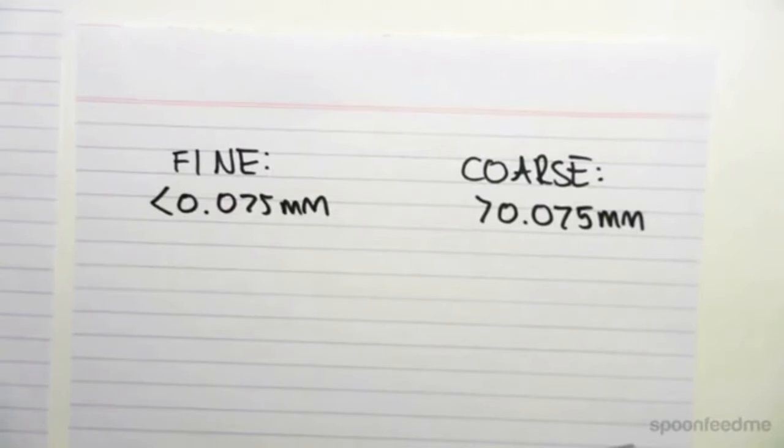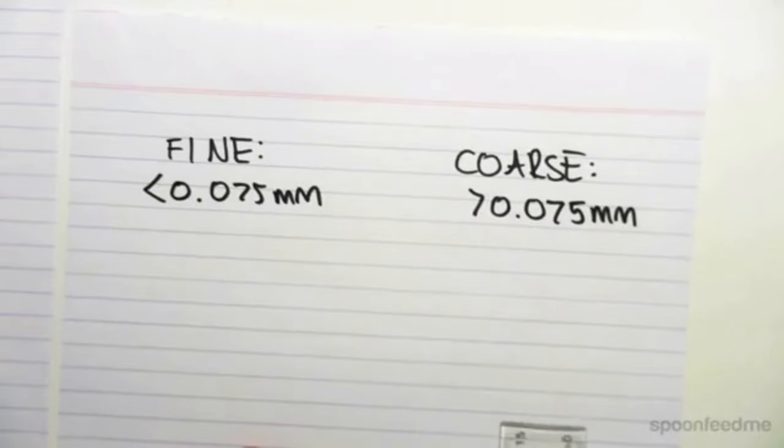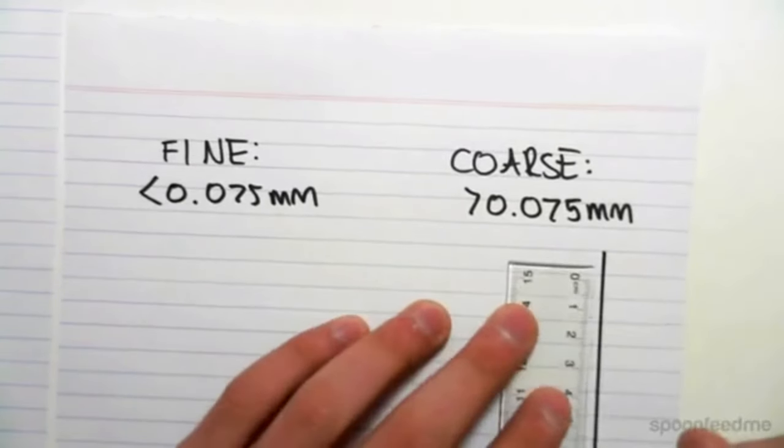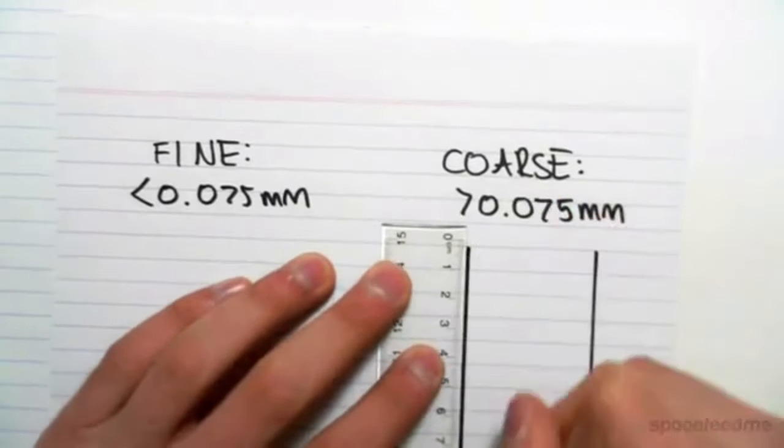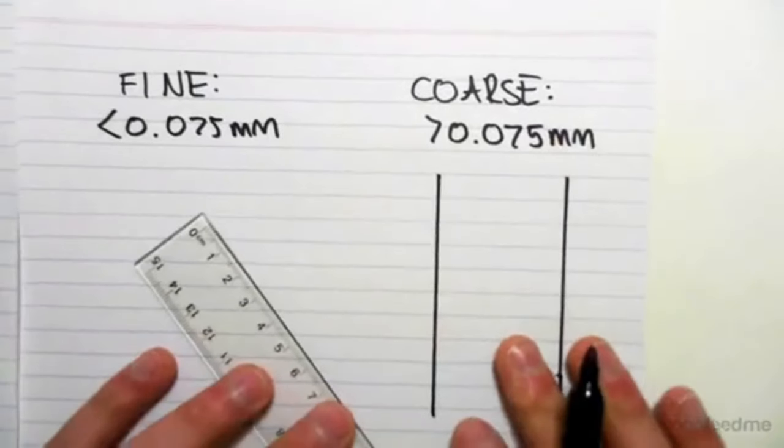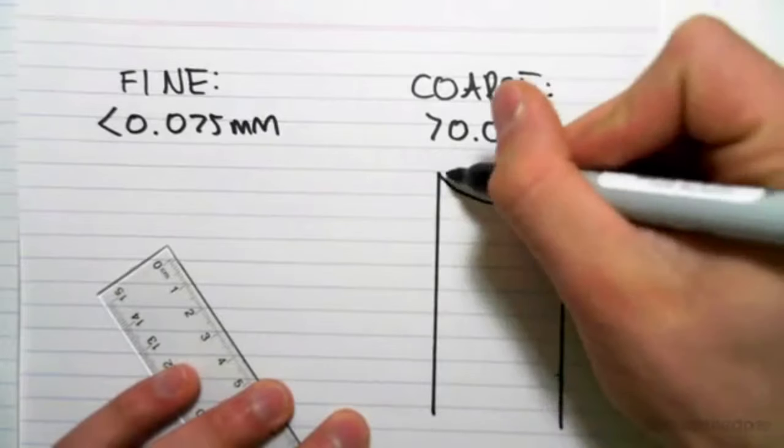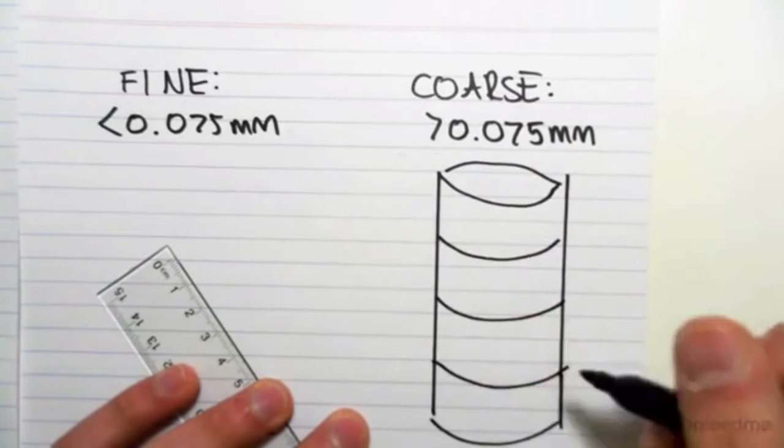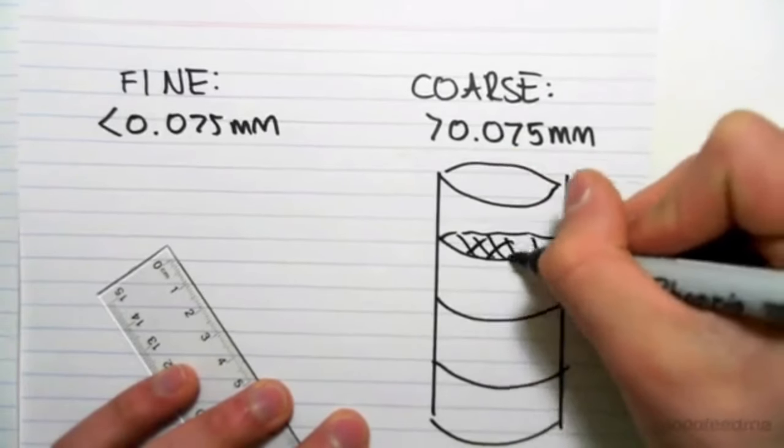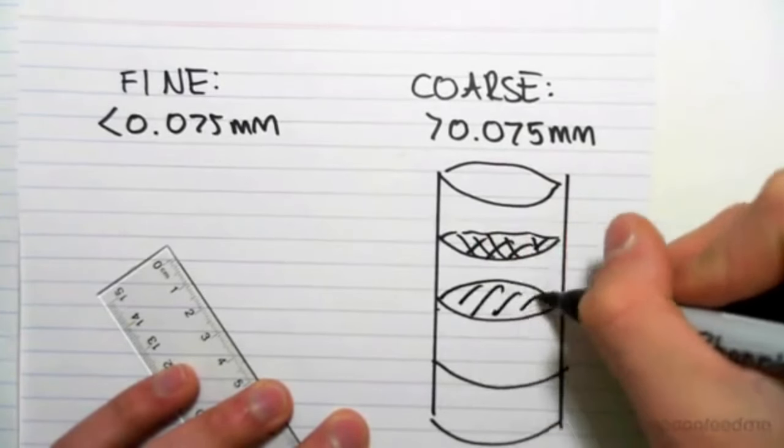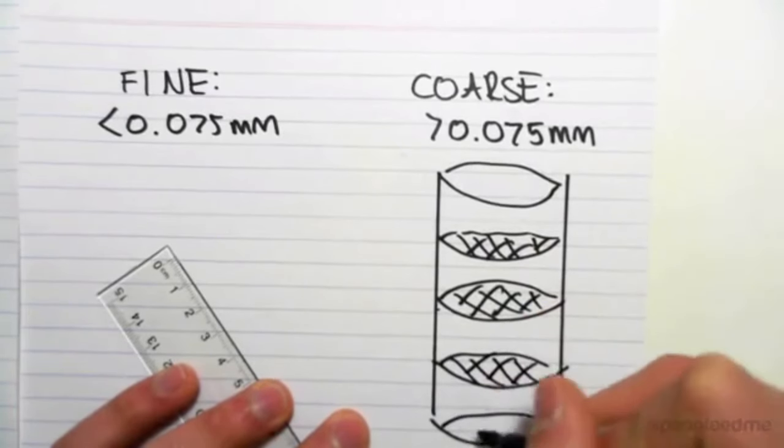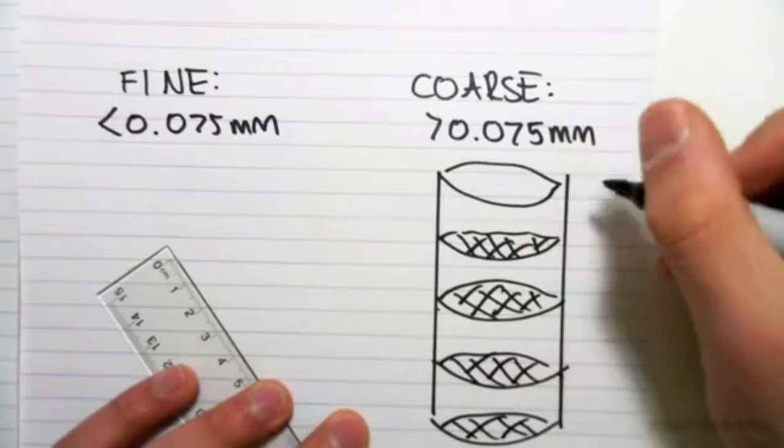The way we come and do this, the way we actually measure the distribution of particle size is we get a series of sieves. And we'll stack them all on top of each other, something like this. And then we'll have mesh, which is the sieve, and this mesh is all different sizes, and it's going to be decreasing as we go down.